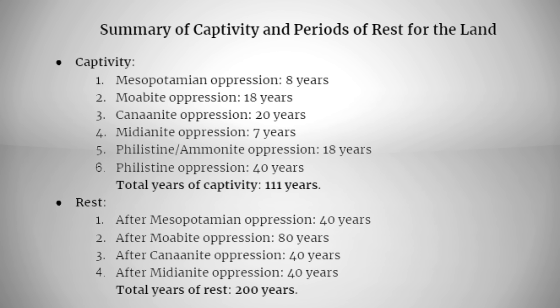Through each of these cycles of captivity there is one constant: every time Israel turned back to God, he delivered them. Whether they were oppressed for 7 years or 40 years, God always raised up a deliverer and the land found rest. This is a reminder for us today — no matter how long we've been in a season of hardship or oppression, God's deliverance is certain when we turn our hearts back to him. After every period of struggle there is a season of peace and restoration. Stay encouraged and keep trusting in the God of Israel, who always brings his people out of captivity and into freedom.